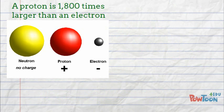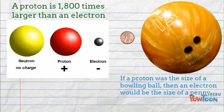A proton is 1,800 times larger than an electron. That would be like if a proton was the size of a bowling ball, an electron would only be the size of a penny.